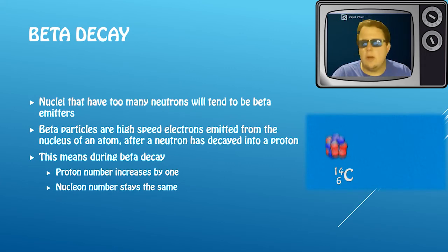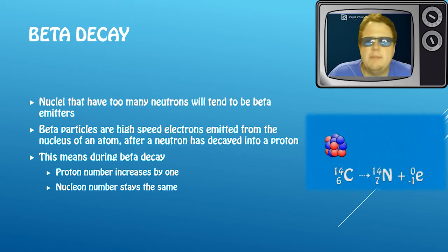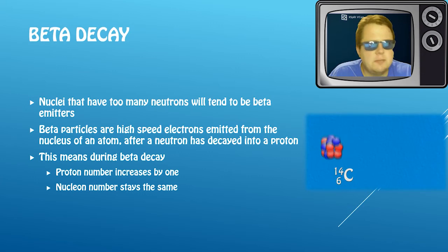Okay, so our beta particle then. So our beta particle is going to be emitted by nuclei that have too many neutrons. Now a beta particle, as we've said before, is a high-speed electron, and it's basically emitted when a neutron decays into a proton. And as we've had a neutron become a proton, this means our proton number increases by one.